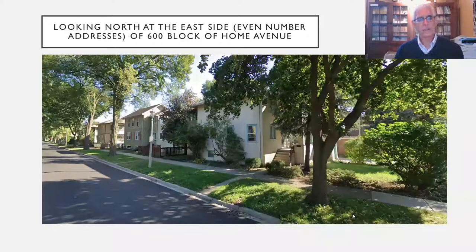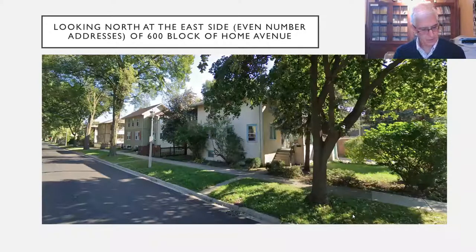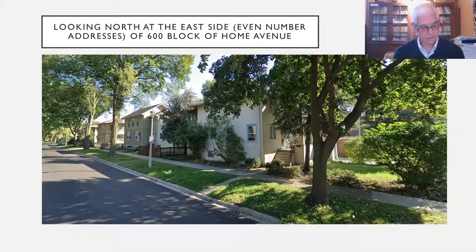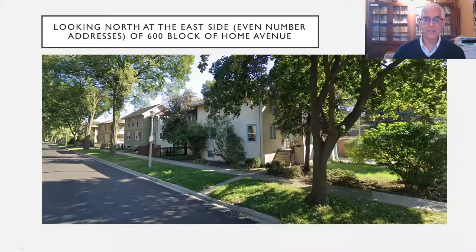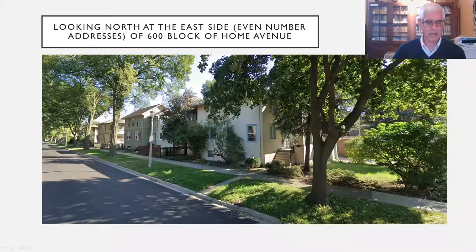Looking north up Holm Avenue at the east side of the street — the even-numbered addresses — the lots on Holm Avenue south of Madison differ in that the rectangle is turned so that the longer dimension is facing the street. You can see this would be considered the frontage, typically, and the houses are turned 90 degrees.